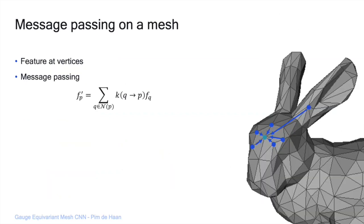For message passing on the mesh, we can treat a mesh as a graph by looking at the adjacency matrices. Message passing can proceed directly along edges, but we can also consider larger neighborhoods — message passing between nodes that are not direct neighbors. In general, our message passing kernel is a matrix for each edge, and then we do some aggregation operation to produce the output feature at point p.